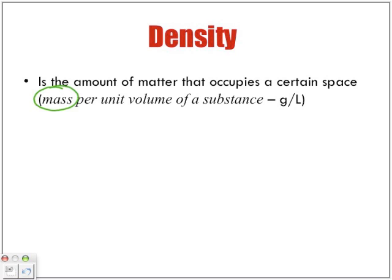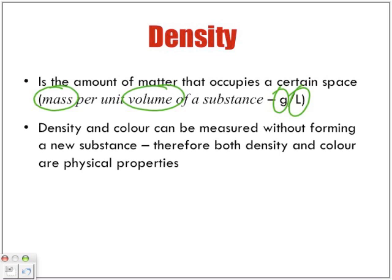It's mass divided by volume, so whatever units of mass you're using divided by whatever units of volume that you're using. Density and color can be measured without forming a new substance.